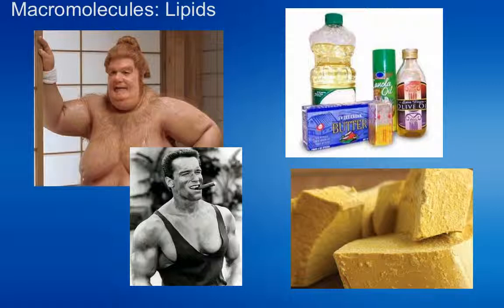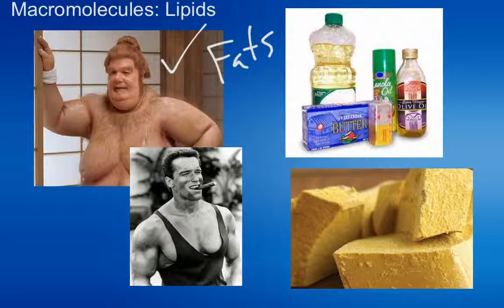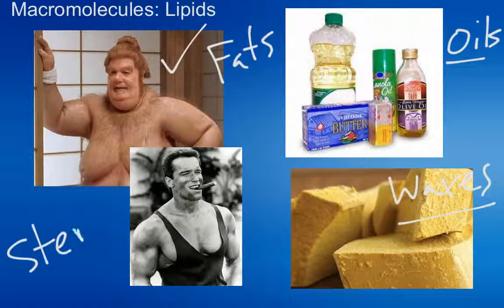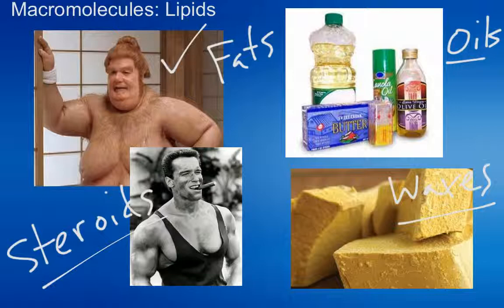There are four major types of lipids that we deal with in biological systems. One of them is fats — we got our good old friend Mr. Fatty from Austin Powers. Another type is oils, which you've probably cooked with. We have waxes, like those used in candles and earwax. And then we also have steroids — steroids are chemical messengers that we use in our body all the time.